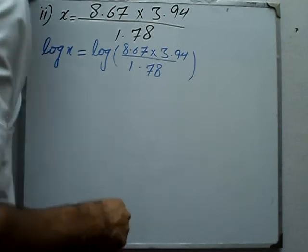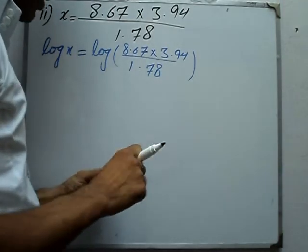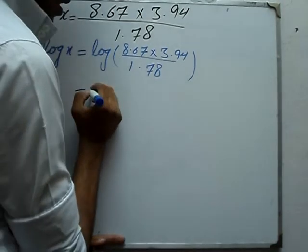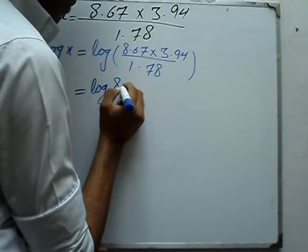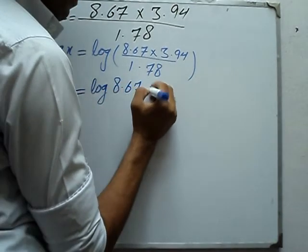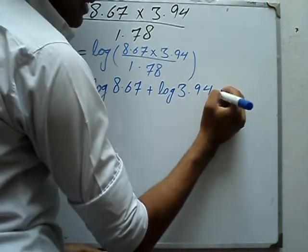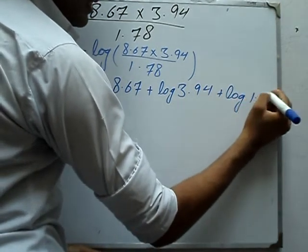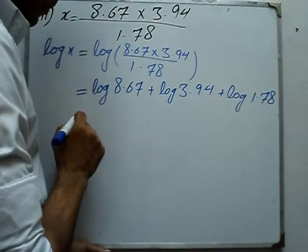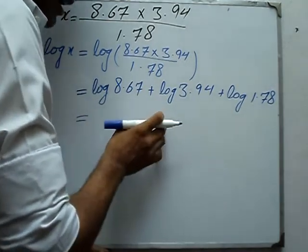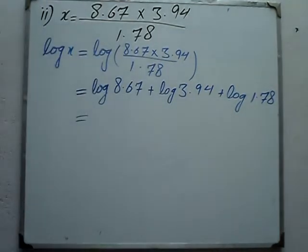Next step: log x equals log 8.67 plus log 3.94 minus log 1.78. From the log table, log 8.67 equals 0.9380.